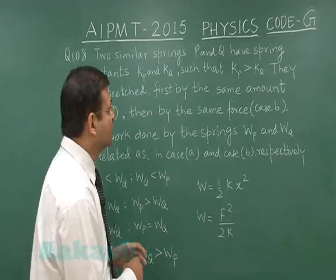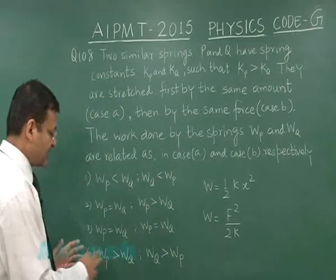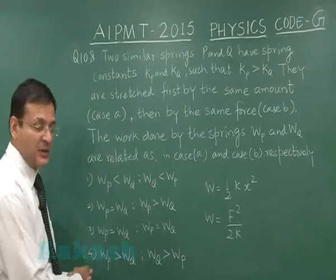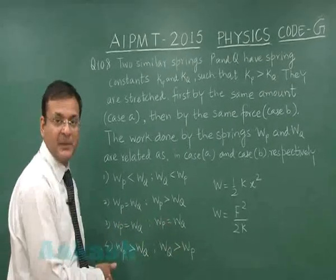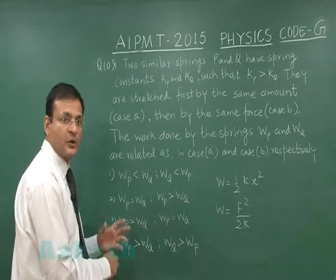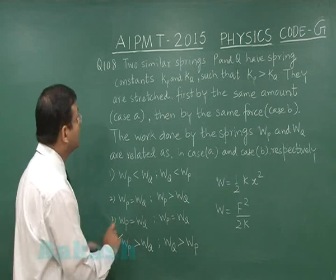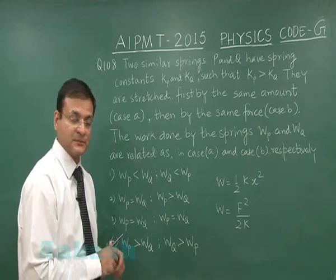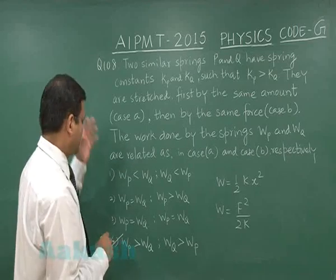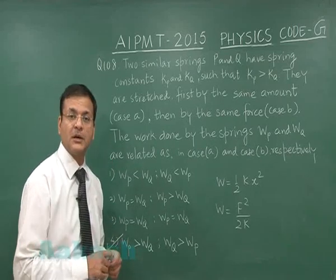In the first case, P should be greater than Q, and in the second case, Q should be greater than P as far as work is concerned. For that purpose, the most appropriate answer for this question will be the fourth option. That is the answer to question number 108.